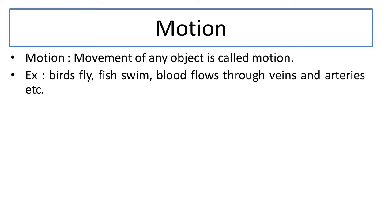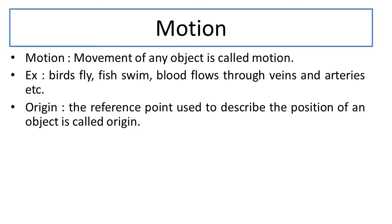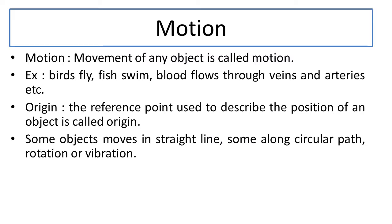Now, if there is motion, then we will describe it. To describe whether there is motion or not, we need a term called origin. The reference point used to describe the position of an object is called origin. The starting point which describes the motion will be the origin.